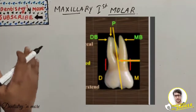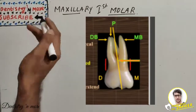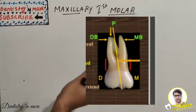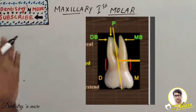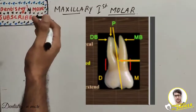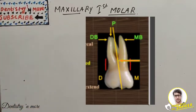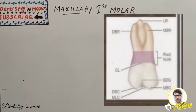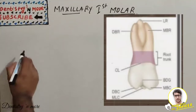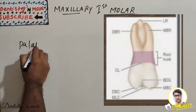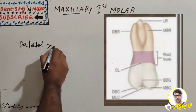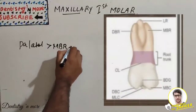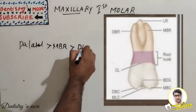The mesio-buccal root is inclined distally, the disto-buccal root inclines mesially, and the palatal root inclines buccally. The longest root is the palatal root, and the shortest root is the disto-buccal root. The order from longest to shortest is: palatal, then mesio-buccal, then disto-buccal.